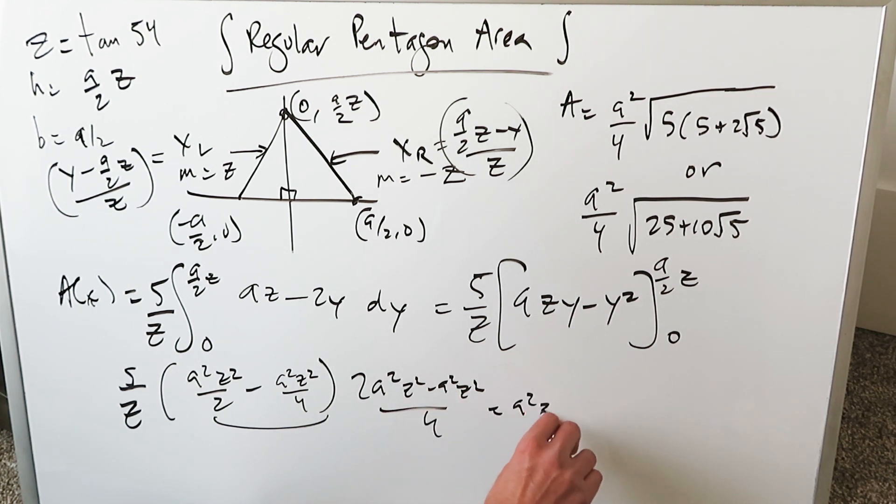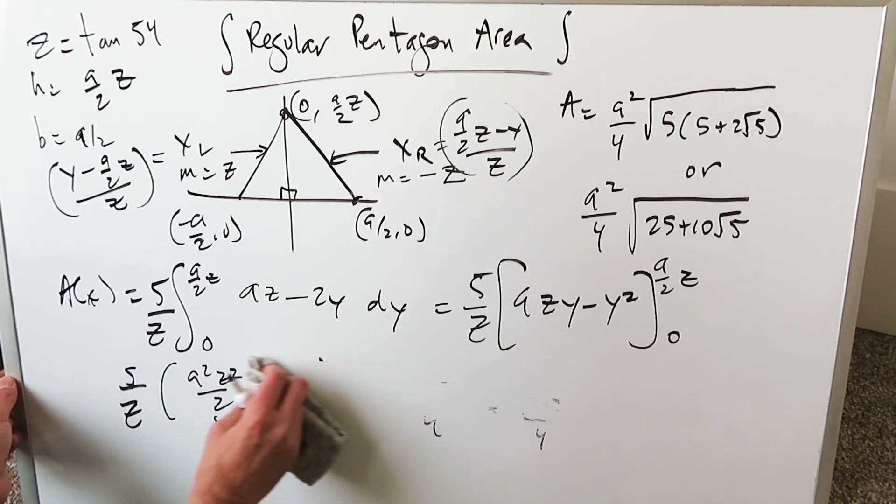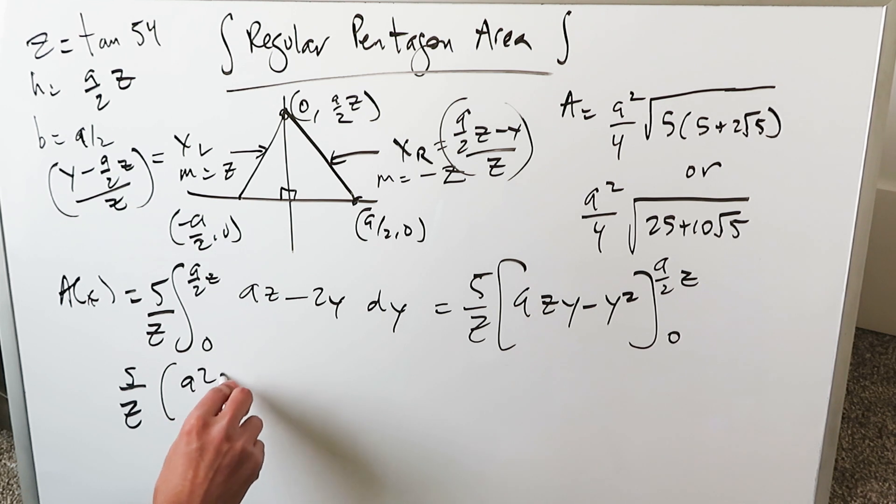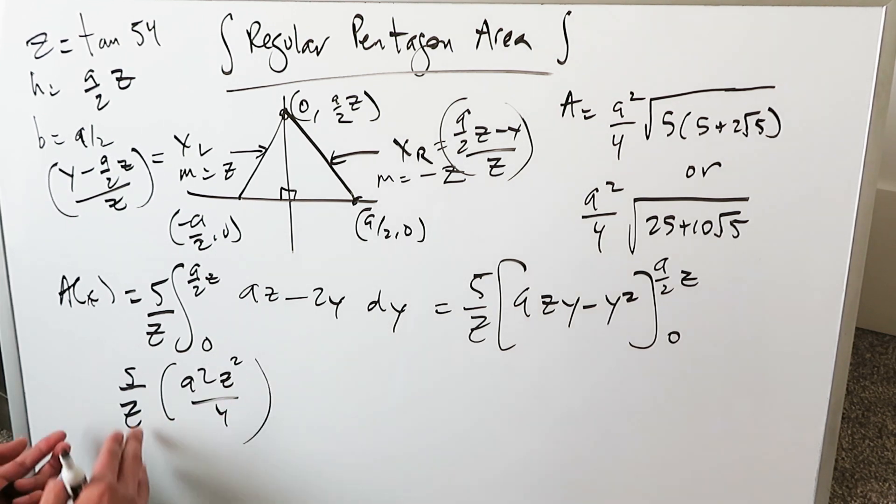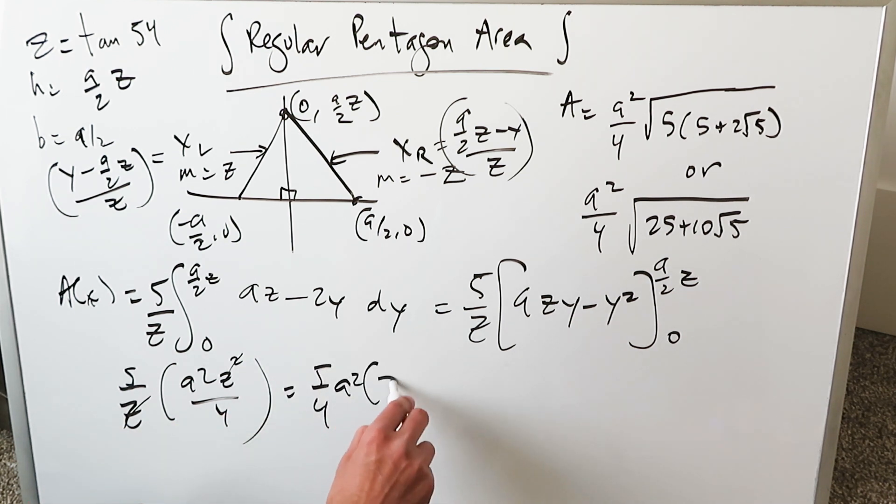You know when you do the common denominator over here all of this you'll see 2A square Z square minus A square Z square all over 4. When you simplify this you're getting A square Z square over 4. This A square Z square over 4 comes out from here and that's what I want to bring right into this parentheses. A square Z square over 4 times 5 over Z. You can cancel out this Z with this square. You'll end up seeing 5 over 4. I'm bringing out the 4. I have an A square then I have a Z.